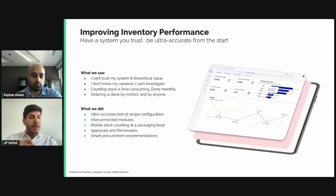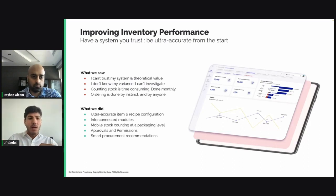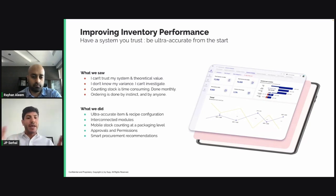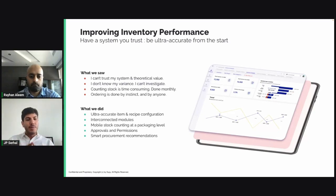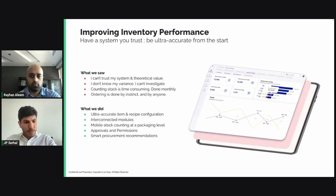Here's what we did. Within the system, we've built an ultra-accurate item and recipe configuration process that we haven't seen anywhere else. Items are registered not only as single items but also as packages. For example, instead of one bottle of ketchup, you have a package of one box of 12 bottles of ketchup, and then a bigger package containing six boxes of 12 bottles. This means that when you're counting stock, you can count per package — not just by item — and the software does the calculation on the spot, removing the risk of human errors.